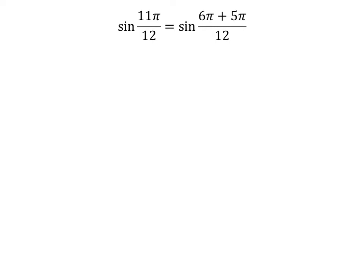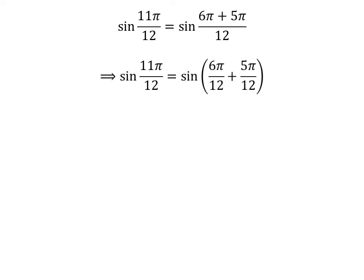11 times pi is equal to 6 times pi plus 5 times pi. So, sine of 11 times pi upon 12 is equal to sine of 6 times pi plus 5 times pi upon 12. The fraction can be written as a sum of two fractions. So, sine of 11 times pi upon 12 is equal to sine of 6 times pi upon 12 plus 5 times pi upon 12.